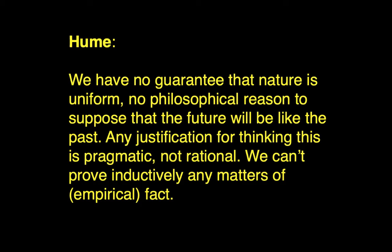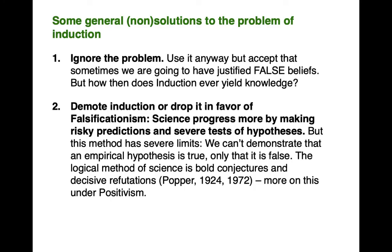There are attempts to resolve the problem of induction. Some general non-solutions: First, we can ignore the problem, use induction anyway, but accept that sometimes we will have justified false beliefs — like that one about ravens. You wouldn't fault a person for believing a white bird among ravens is probably not a raven, because all their experience confirms that belief. The issue is that our experience is limited. Second, we could demote induction, or drop it, in favor of falsificationism — the idea that science progresses more by making risky predictions and severe tests of hypotheses. We never prove anything; at best, we disprove a claim. This method has severe limits: we can only demonstrate that an empirical hypothesis is false, not that it's true. The logical method of science, on this view, is bold conjectures and decisive refutations.